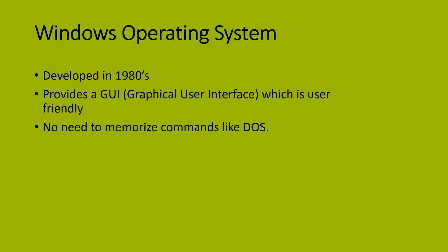Command line interface means it shows a black screen and you have to write a whole command to perform any action. Some specific commands were defined to work with DOS, and it was difficult to remember those commands. But the advantage of Windows was that it provides a color interface called GUI — graphical user interface — which was very user-friendly.